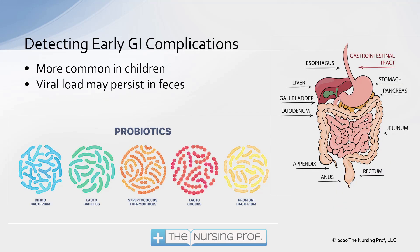GI complications, as I mentioned before, are more common in children, but the viral load may persist. This can happen anywhere in the GI tract because the virus gets down through there via the bloodstream. One thing that has been shown to possibly help decrease GI complications and maybe even decrease some of the virulence of the virus is using probiotics. Probiotics will compete with the virus in the GI tract and not let it take hold or be absorbed. Research on probiotics is still early, but they've been shown to be safe, so there's probably no problem adding them to the mix if you're trying to avoid getting COVID-19.